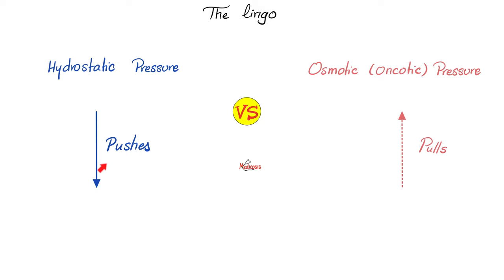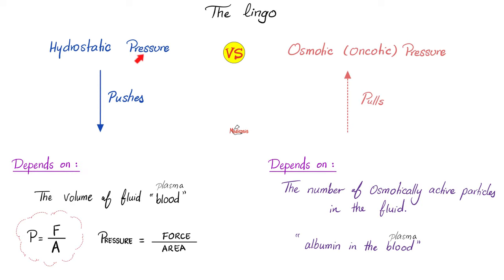Hydrostatic pressure pushes stuff away from it, but osmotic pressure pulls stuff towards it. Hydrostatic pressure depends on — well, if you remember — pressure equals force over area. The force here is the volume of plasma inside the vessel pressing against the surface area of the blood vessel wall. So the more blood you have, the greater the hydrostatic pressure. As the force goes up, hydrostatic pressure goes up.